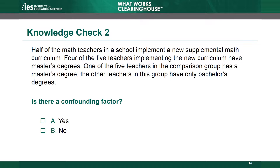Knowledge Check 2. Half of the math teachers in a school implement a new supplemental math curriculum. Four of the five teachers implementing the new curriculum have master's degrees. One of the five teachers in the comparison group has a master's degree; the other teachers in this group have only bachelor's degrees. Is there a confounding factor?